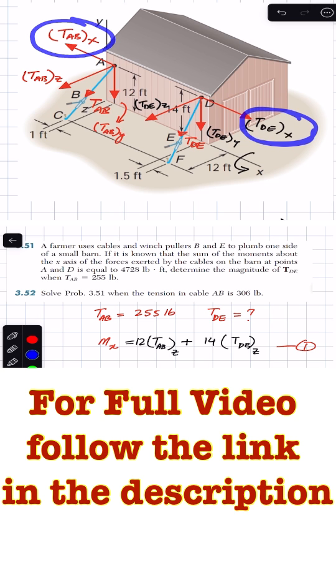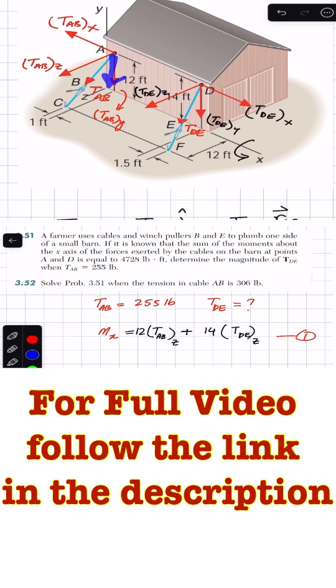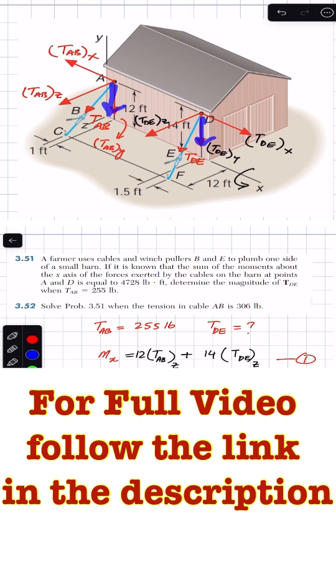This y component and this y component, they are intersecting with the x-axis, so their moment arm from the x-axis, or we can say that the perpendicular distance of these two components from that x-axis is zero, so they are unable to produce the moment about the x-axis as well. So only the z components are producing the moment about the x-axis.